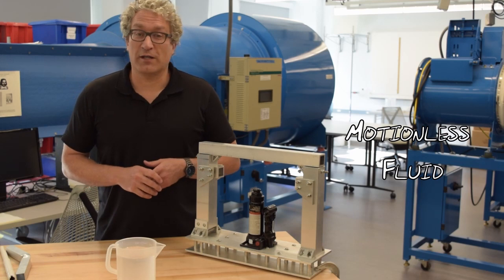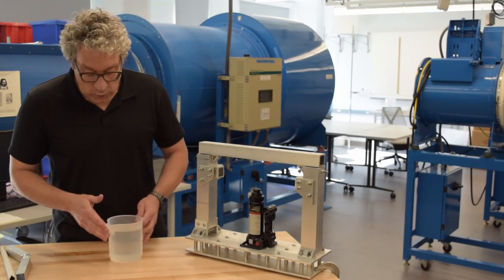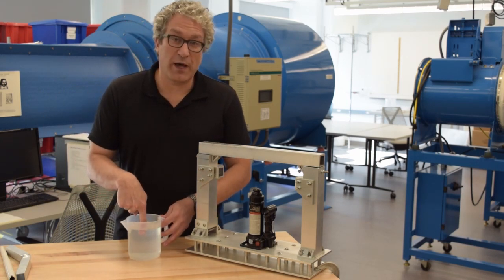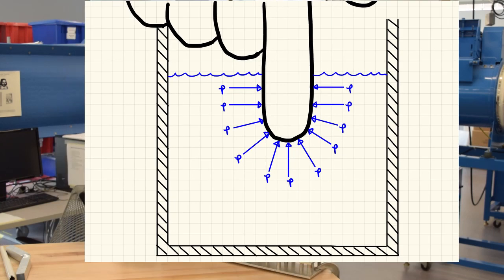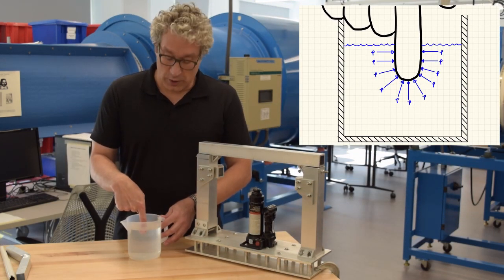A motionless fluid, on the other hand, can only generate stresses isotropically. So if I take this water and I push on it with my finger, the water can only push back isotropically. It can only generate a pressure in the direction of the normal of the surface between the water and my finger.